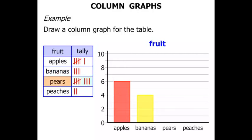Then we've got pears. Now how many pears? Well there's a 5 and 4 makes 9. So we need to draw a column that goes up to 9 for pears.